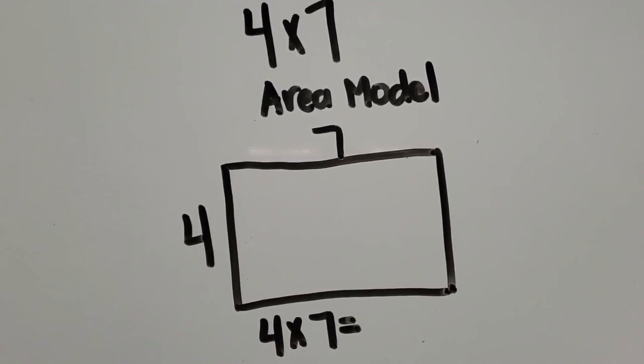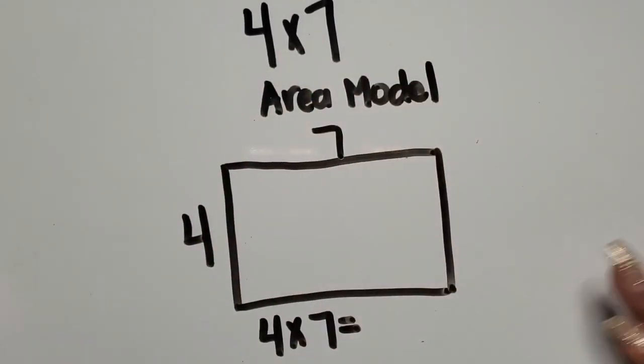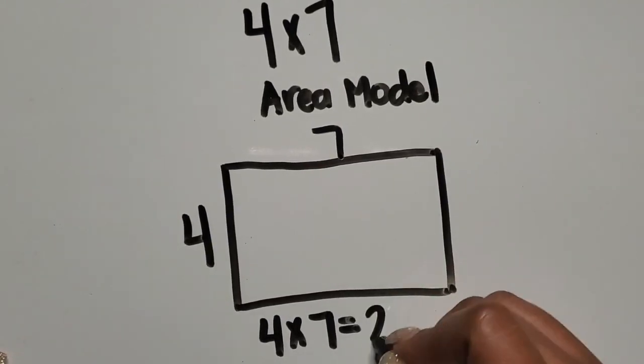At this point when students are representing their models or representing their equations with just the numbers and not anything to count, they should know their facts by then. So I know four times seven is 28.